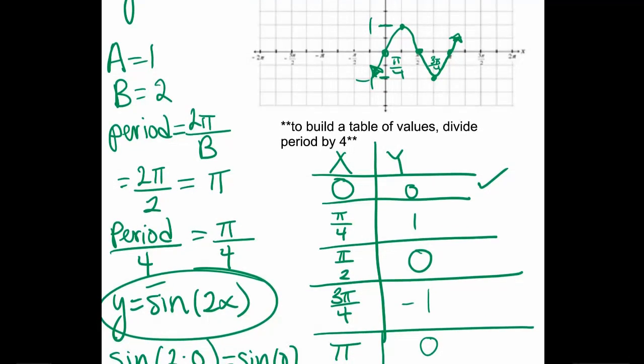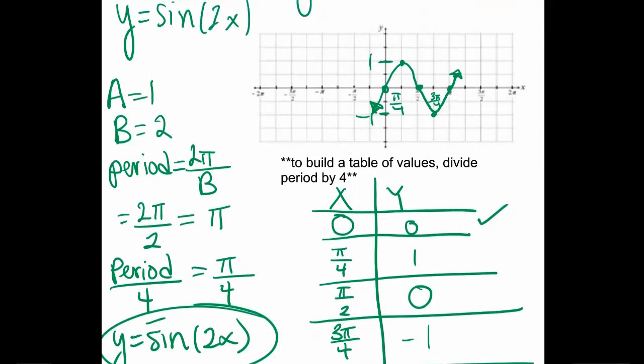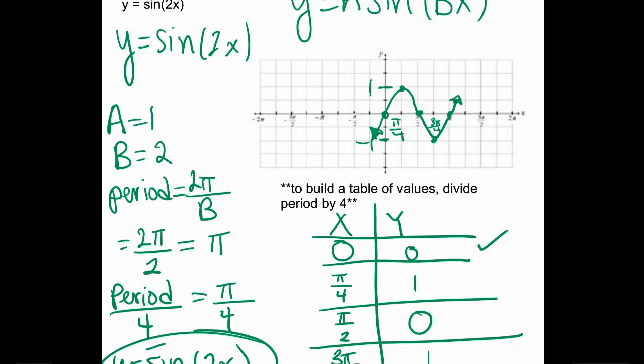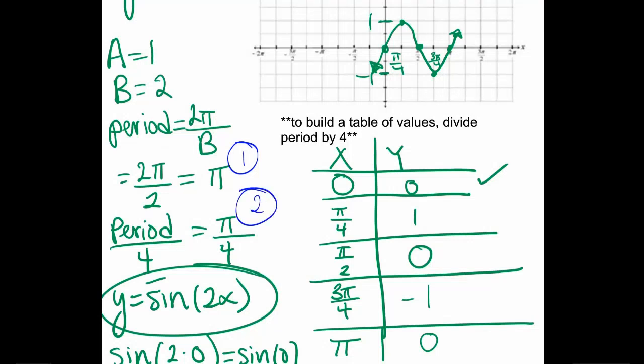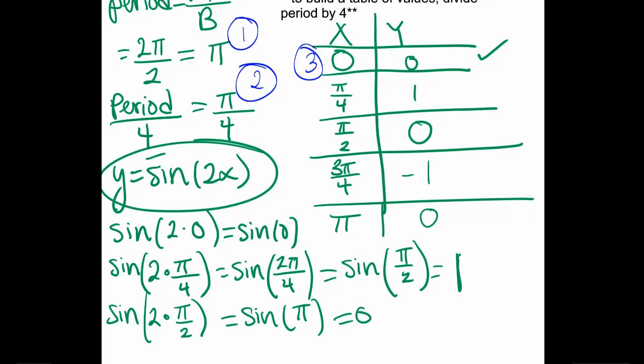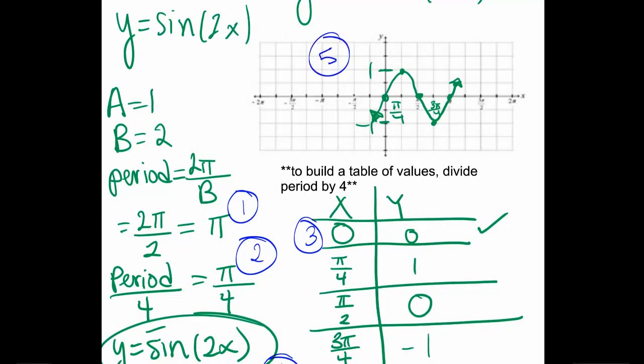Let's do a quick review again. Your first step is to find period. Your second step is to divide period by 4 to figure out your intervals. Your third point is to use those intervals to start a table of values. Your fourth step is to evaluate that table of values and fill it out on the right-hand side of your table. And your fifth step is to graph. Remember that when you connect the dots, your lines should be curved, there should be arrows, and all of your axes should be nice and properly labeled. Please reach out if you have any questions. I hope this was a helpful video for you.